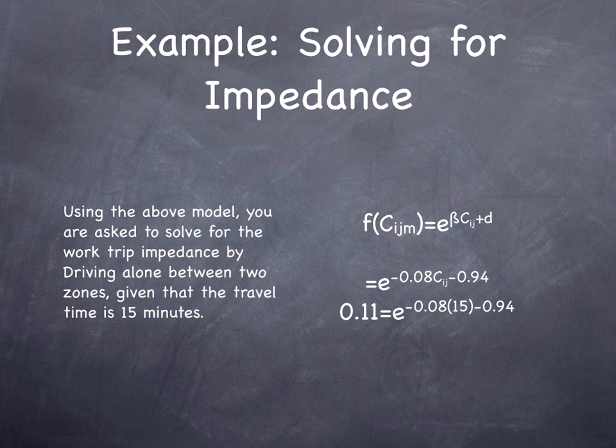Now, why am I using c instead of t for the cost of travel? Because we were using t for the number of trips, and it would be confusing to use t for more than one thing. This is an empirical function. There's no law of physics which says that e to the minus 0.08 times c_ij is the impedance relationship between two places. It's just what was estimated with the data for Washington, D.C. at a single point in time for a particular mode.